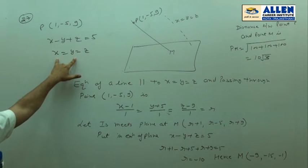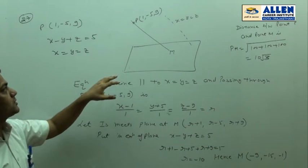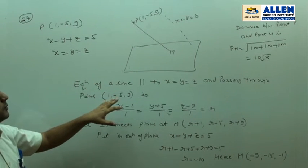As the direction ratios of line x equal to y equal to z are 1, 1, 1. So, definitely direction ratios of the line which is parallel to this line will be also 1, 1, 1.